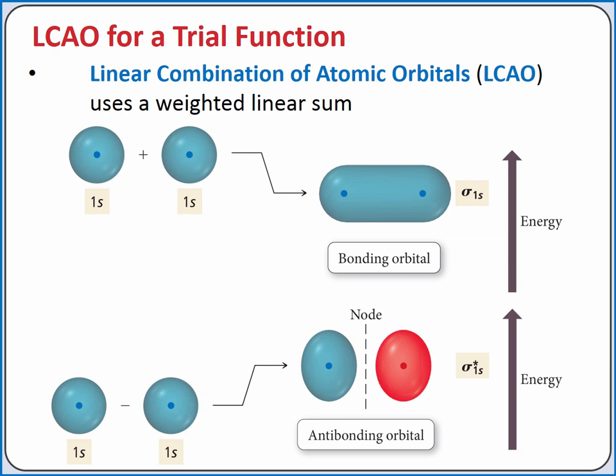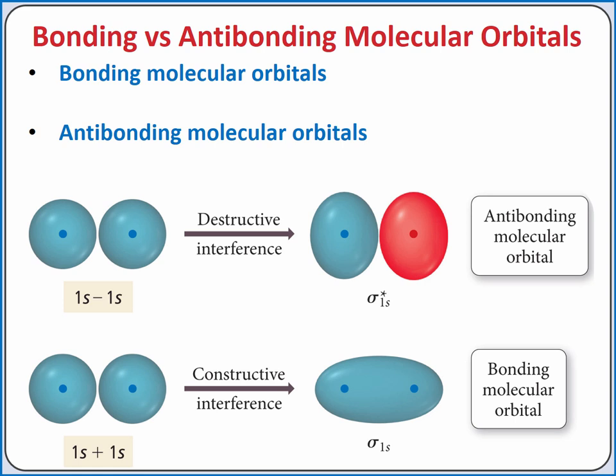When we subtract orbitals, anywhere we have electron density overlapping, we'll consider it to be destructive interference of the two standing waves. As a result, we trade in our two atomic orbitals for two new molecular orbitals. Our bonding molecular orbital is lower in energy than our antibonding molecular orbital. Antibonding molecular orbitals are designated with an asterisk, giving us the sigma 1s bonding and sigma 1s antibonding molecular orbitals.